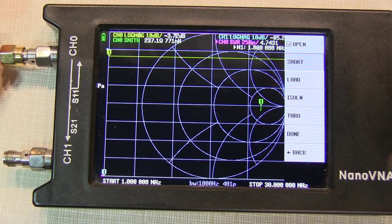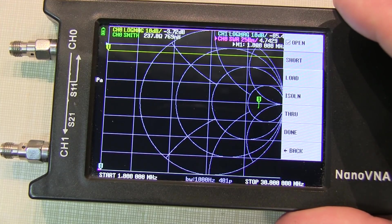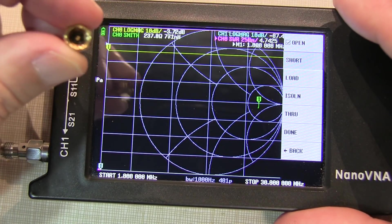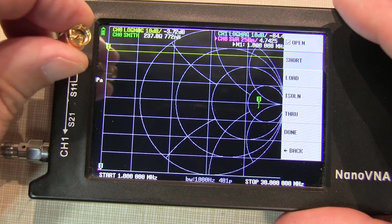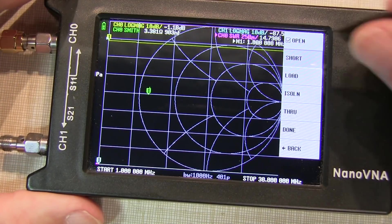And when that completes, we're ready to apply the short. So we'll disconnect our open, take the short, and that's the one that looks like it's got a pin in there, but the whole thing is completely solid gold, so it's presenting a short circuit. And then touch short.